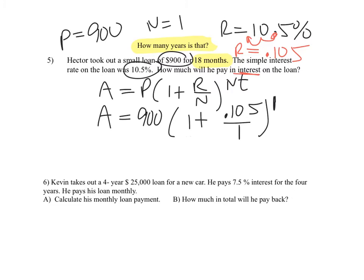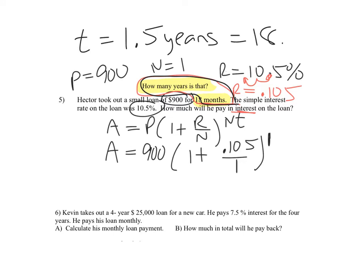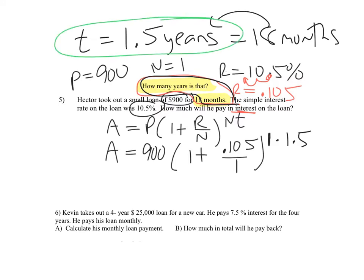The time T is where this problem is a little different — they tell you the loan is for 18 months. But T represents the time in years. So what is our T value going to be? 18 months — well, one year is 12 months, so that's one and a half years. Sometimes when you do these questions, you're going to have to convert months into years. 18 months is one and a half years, so we're going to multiply by a time of 1.5. The loan was given in months, but time is always in years.